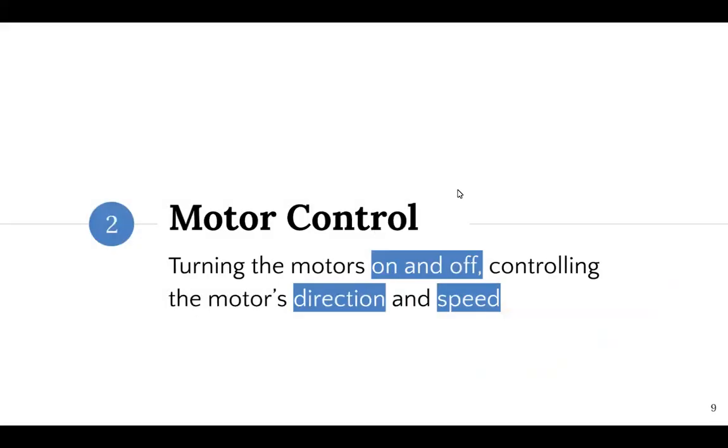So motor control - there are three aspects to it: being able to turn it on and off, being able to control if it turns clockwise or counterclockwise, and also its rotational speed of the shaft.